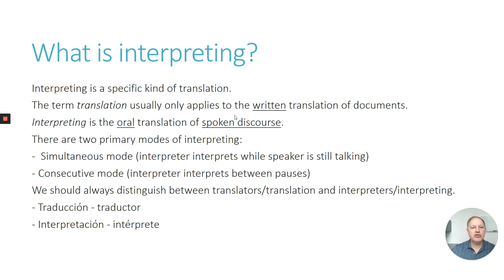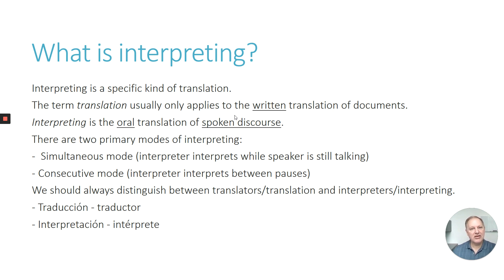So what is interpreting? Interpreting really is a specific type or kind of translation. We know from our previous discussions in class that translation applies to the translation of written documents or text documents. Interpreting, on the other hand, is the oral translation of spoken discourse. So written versus oral, text versus speech.